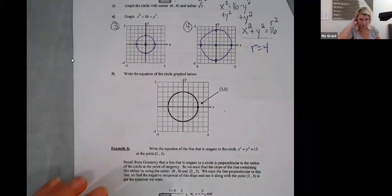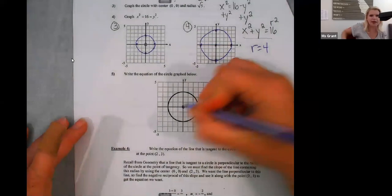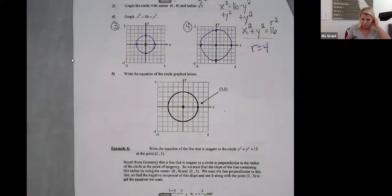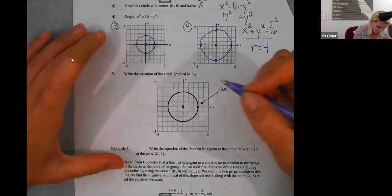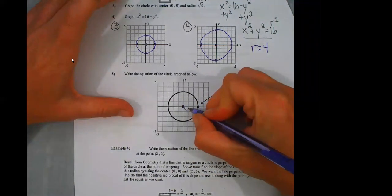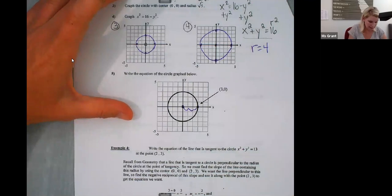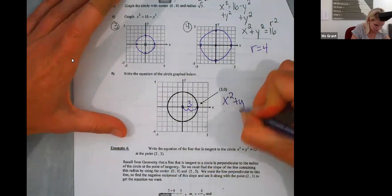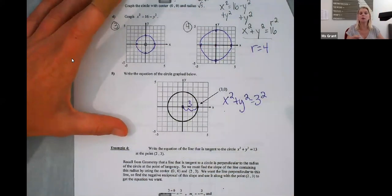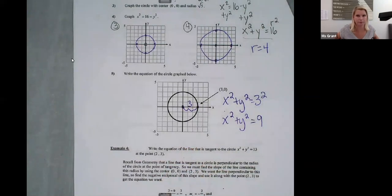Number five. Okay. Write the equation, the circle graph below. It's zero, zero center. And then three comma zero is the point on the circle. What's my radius of this circle? I interrupted somebody. Can you say that again? Oh, it's three. It's three. X squared plus Y squared equals three squared. So don't just put equals three because it's always the radius squared. X squared plus Y squared equals nine. Okay. Now.